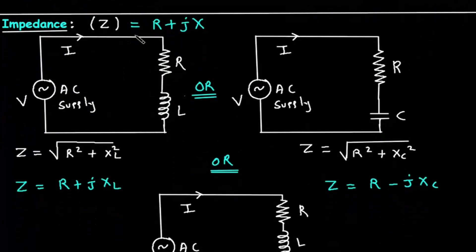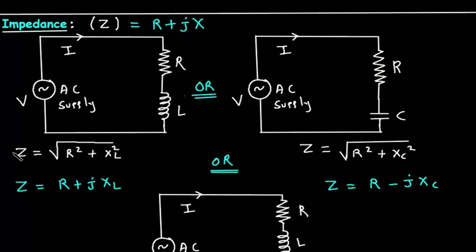Impedance is the combination of resistance and reactance, denoted by capital Z. If the load is a resistor and inductor (R and L), the impedance equals the square root of R squared plus XL squared. This is in scalar form. In vector form, Z equals R plus J XL.